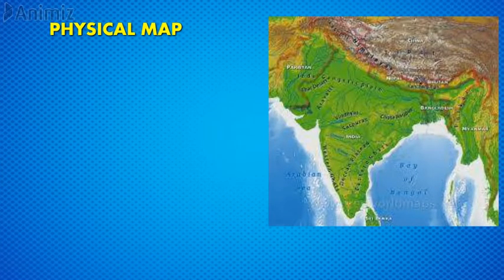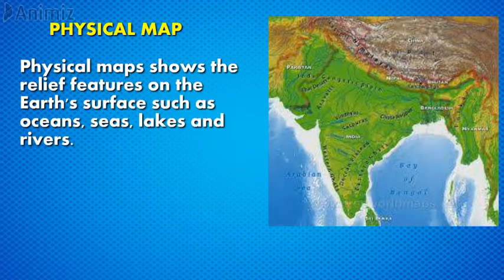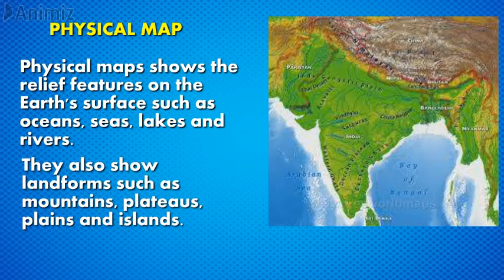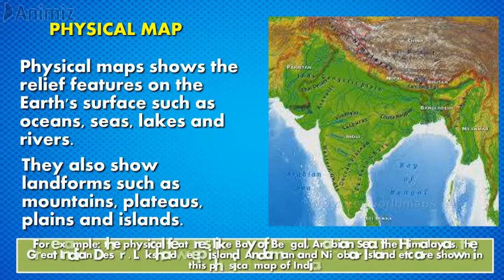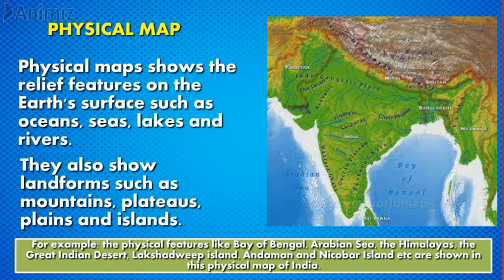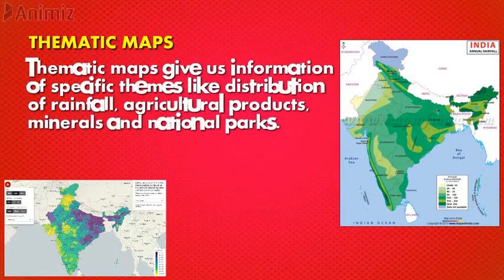The next type is physical map. Physical maps show the relief features on the earth's surface such as oceans, seas, lakes, and rivers. They also show landforms such as mountains, plateaus, plains, and islands. For example, physical features like the Bay of Bengal, Arabian Sea, the Himalayas, the Great Indian Desert, Lakshadweep Island, and Andaman and Nicobar Islands are shown in this physical map of India.